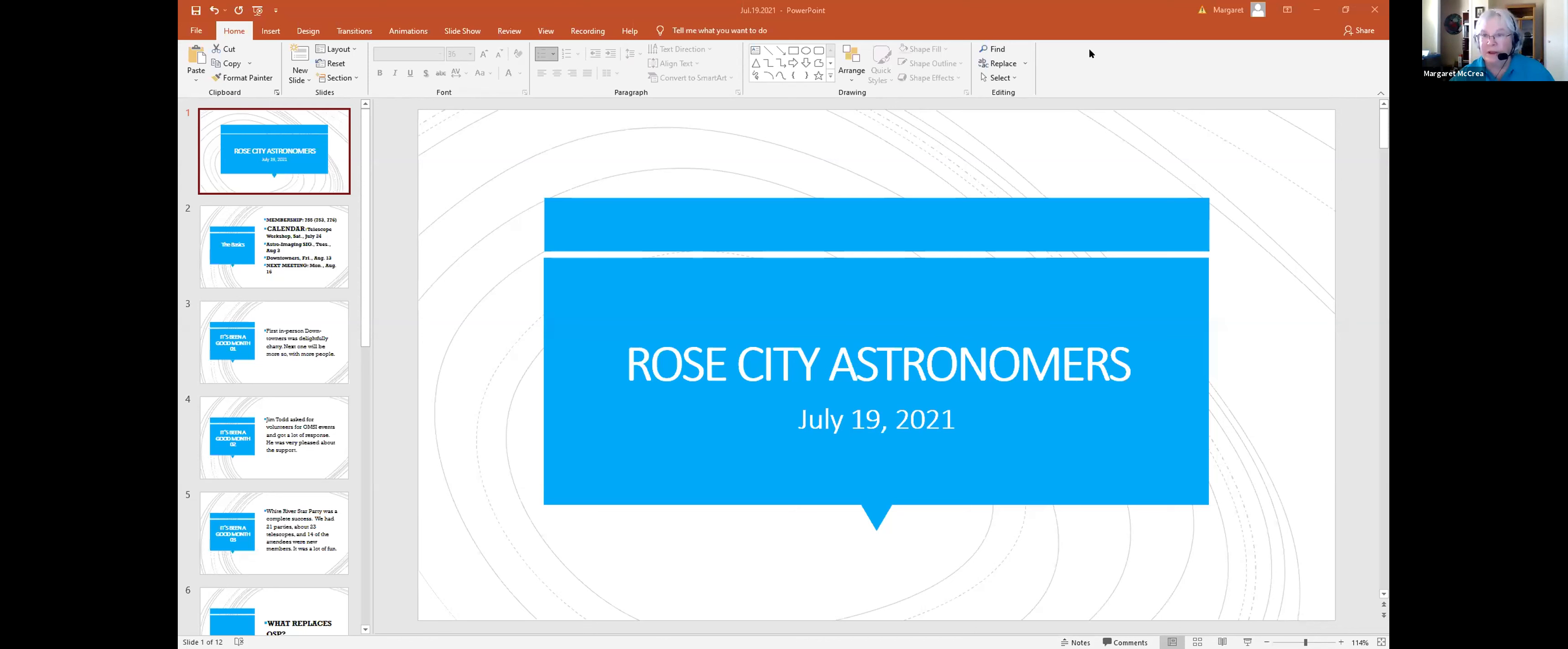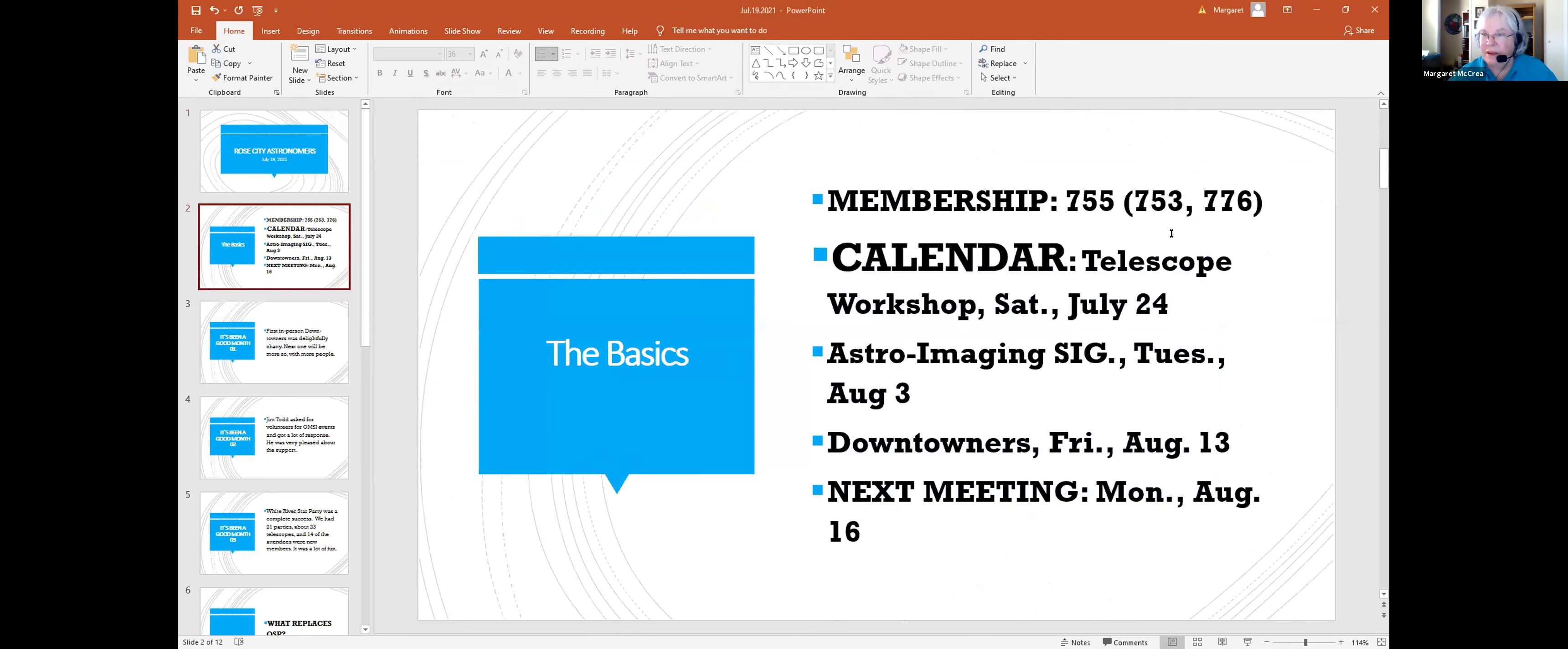Welcome everybody. I'm going to share this month's PowerPoint. Welcome to Rose City Astronomers, July 19th, 2021. We're going to do some basics here. Our membership is staying pretty steady at 755, and a year ago we were at 753.